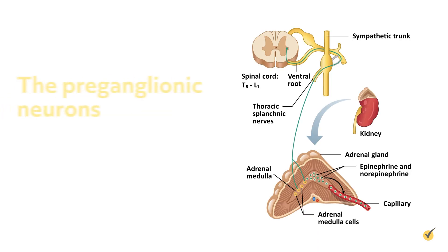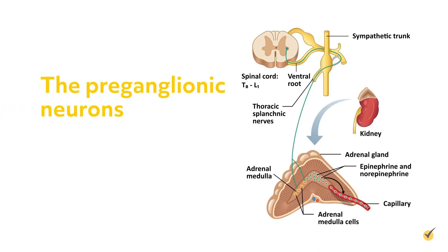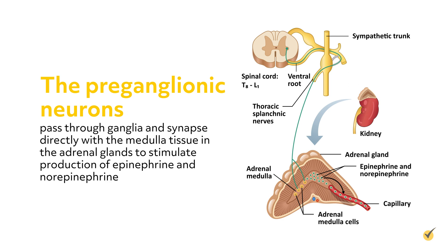For example, the preganglionic neurons pass through ganglia and synapse directly with the medulla tissue in the adrenal glands to stimulate production of epinephrine and norepinephrine.